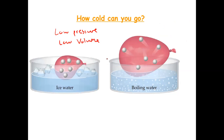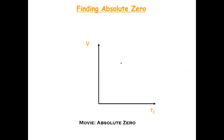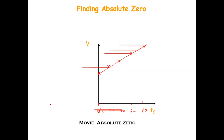A French physicist, Amontons, used this relationship to figure out how cold you could go. He measured the volume of air at zero degrees Celsius, then heated it to 20, 40, 60 degrees and measured the volume each time — the higher the temperature, the greater the volume or pressure. He noticed a clear relationship and said: if I work backwards, I can estimate the coldest possible temperature — when does something have zero energy?